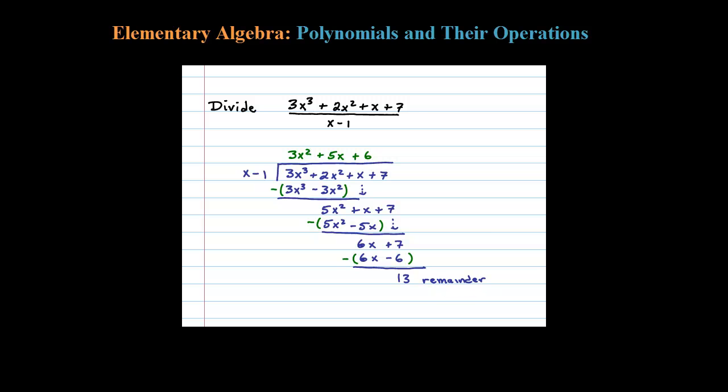What you do with your remainder is you add the remainder, which is going to be the numerator, divided by your divisor here, x minus 1. So the final answer here is 3x squared plus 5x plus 6 plus 13 over x minus 1.